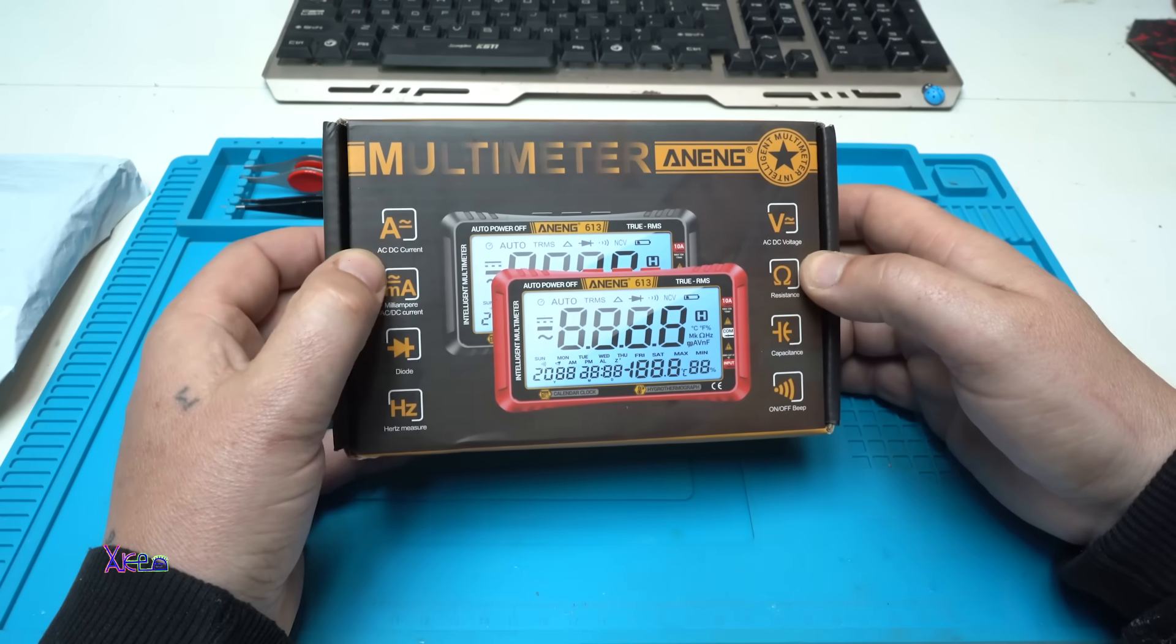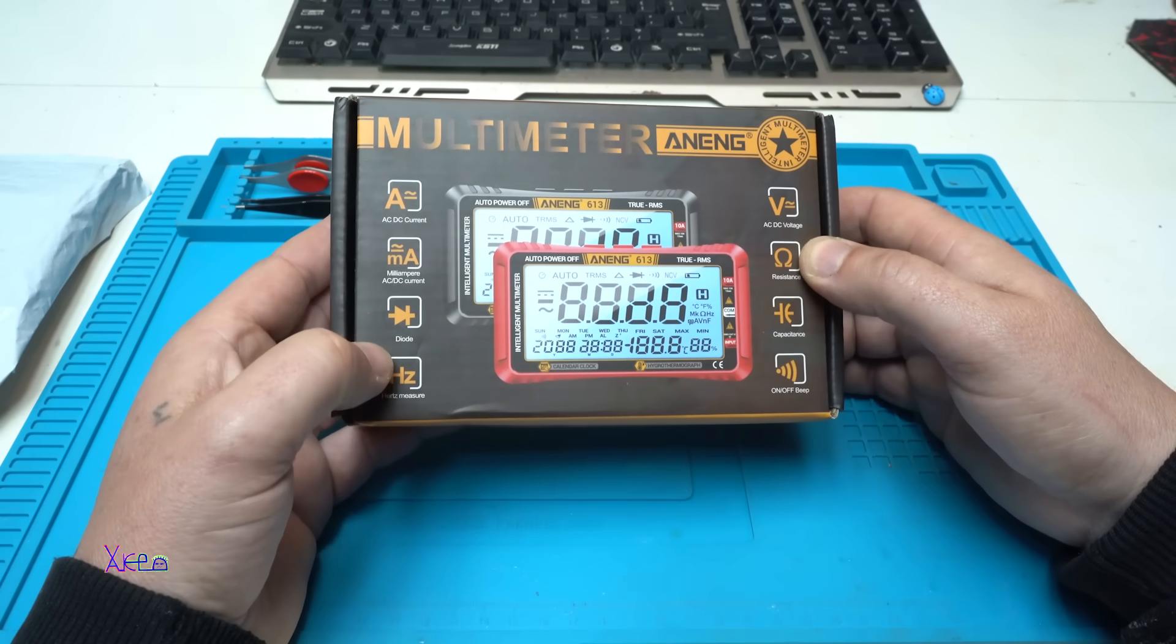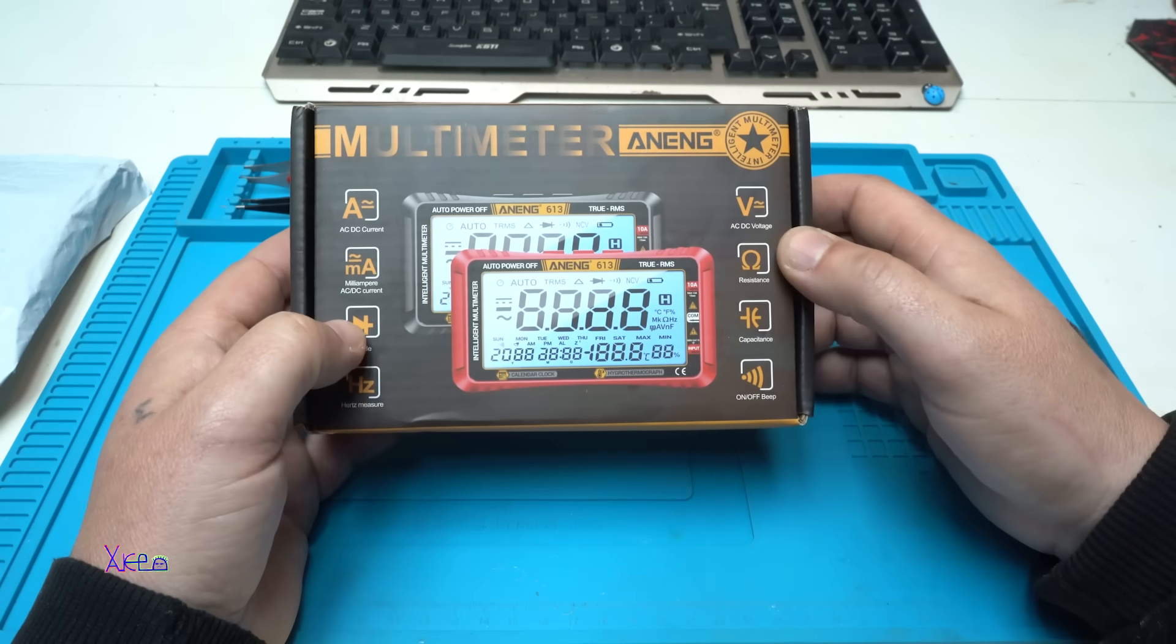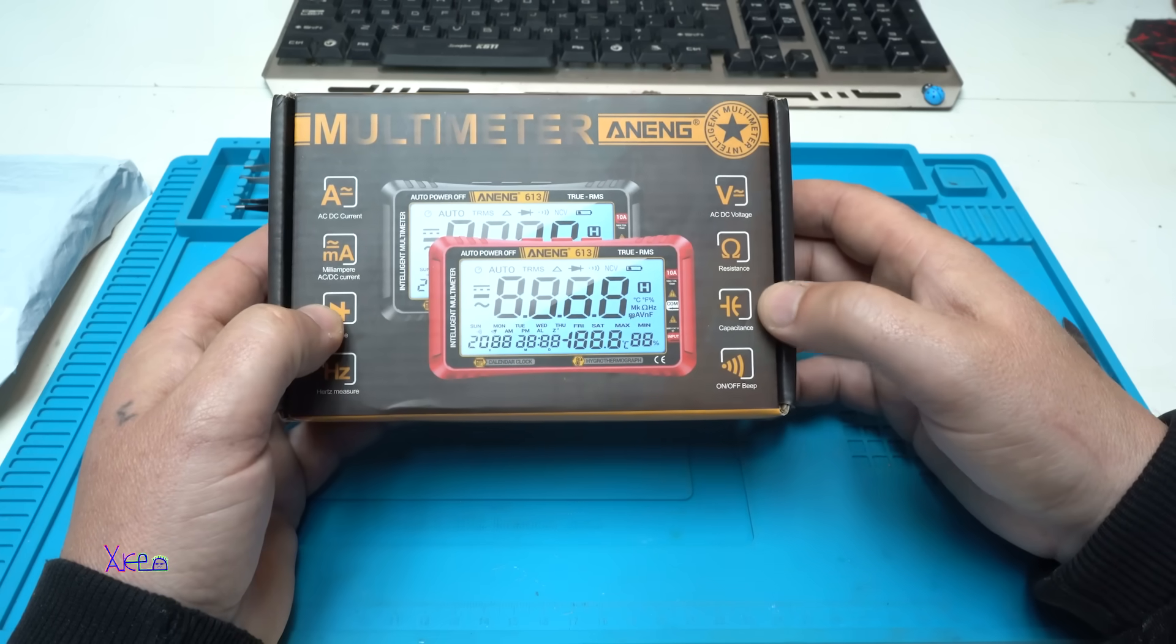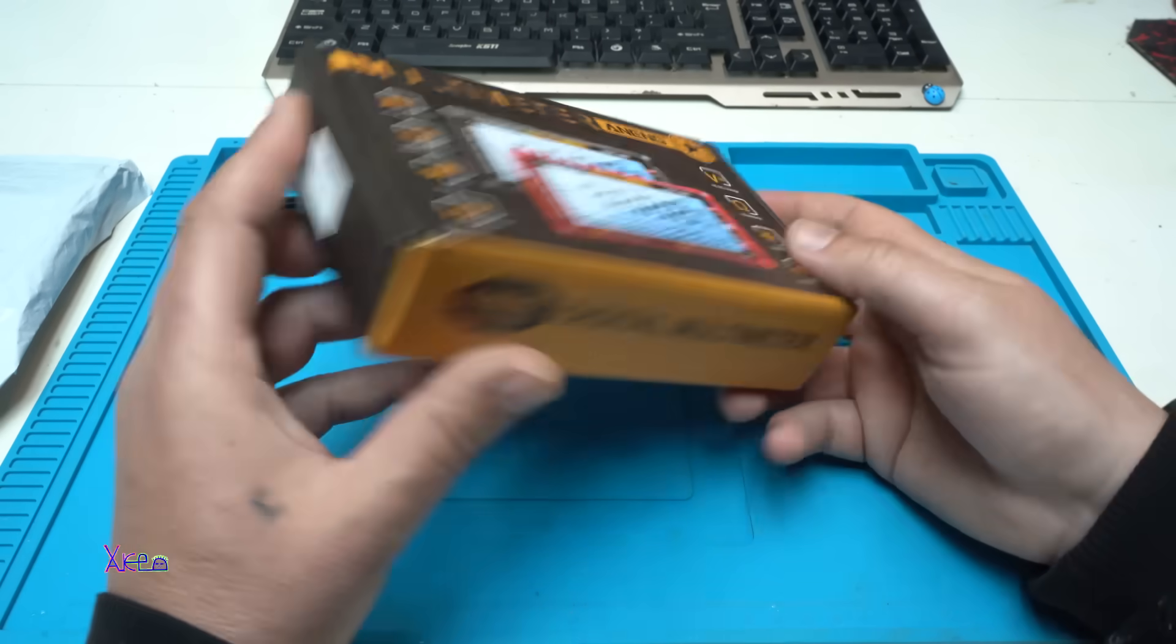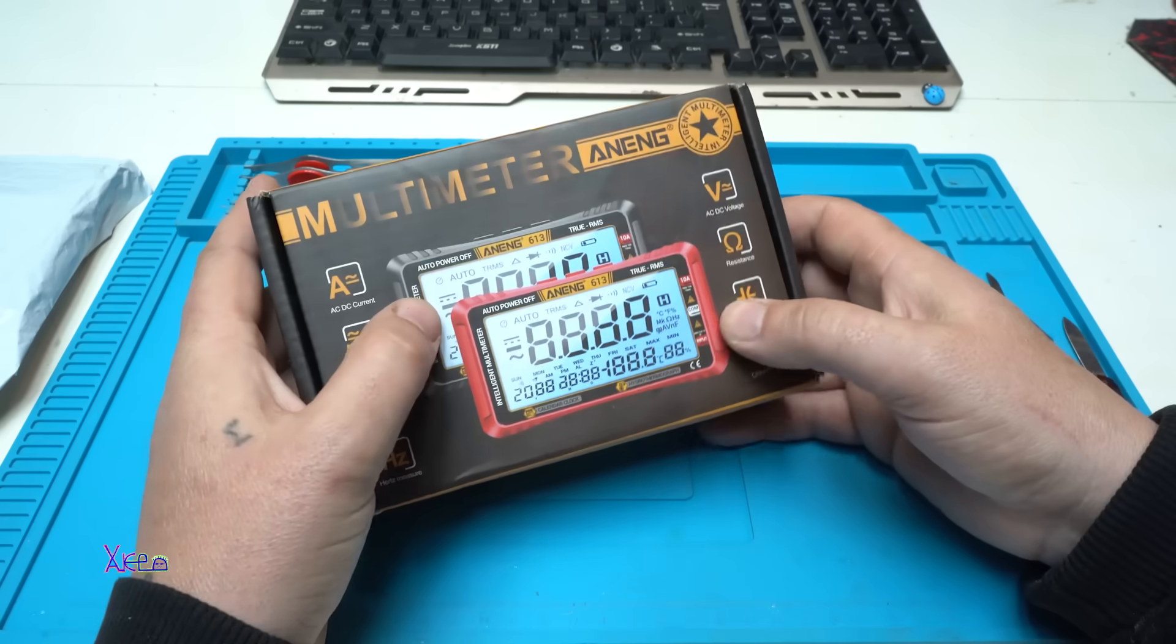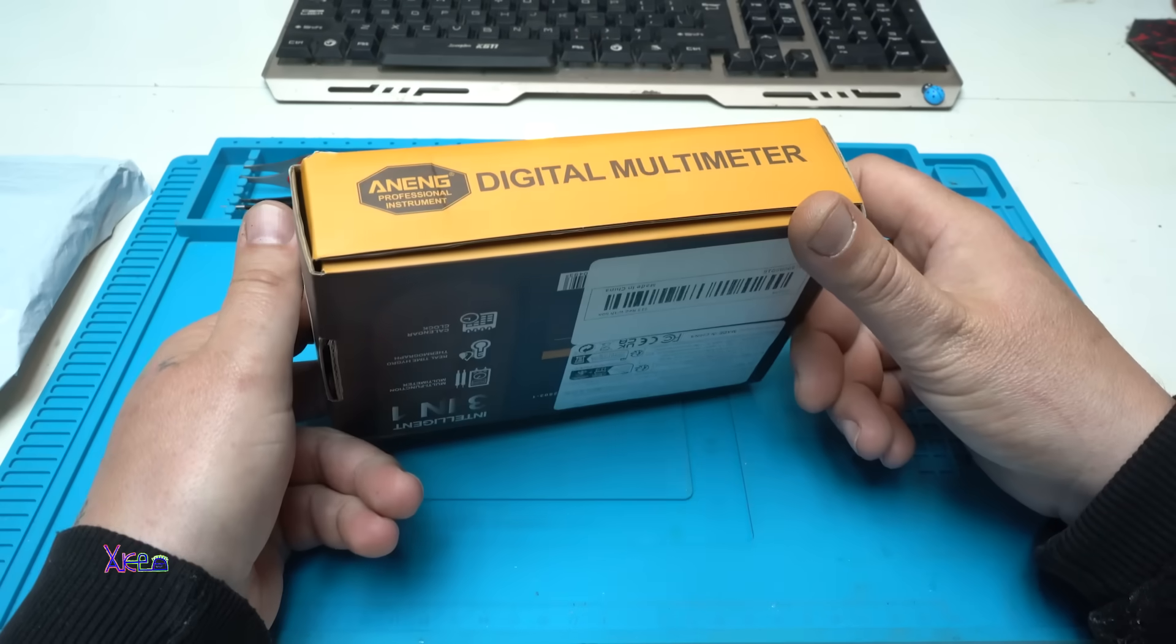It says that it's with AC-DC current measurement, milliampere, diode, hertz measure, AC-DC voltage, resistance, capacitance, on-off beep. The model is 613 red. There is a black one.